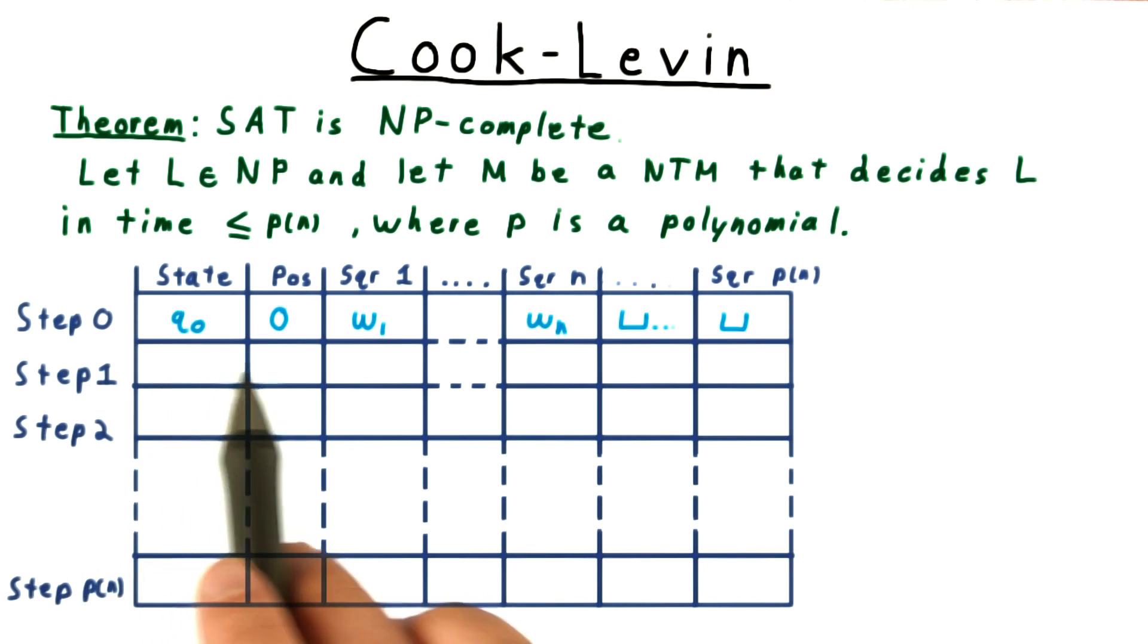Of course, the first row must represent the initial configuration, and the last one must be in an accepting state in order for the overall computation to be accepted. Note that it's possible that the machine will enter an accepting state before step P(N), but we can just stipulate that when this happens, all the rest of the rows in the table have the same values. This is like having the accept state always transition to itself.